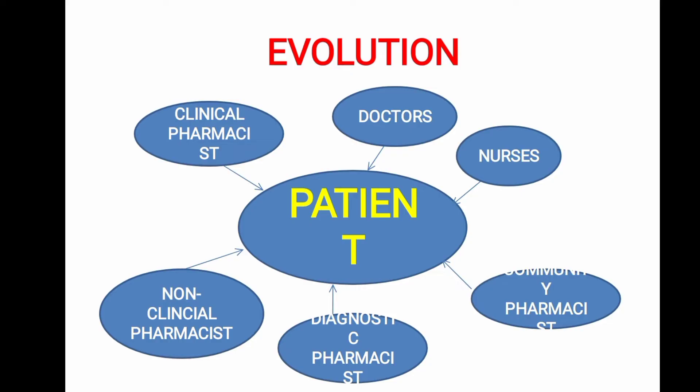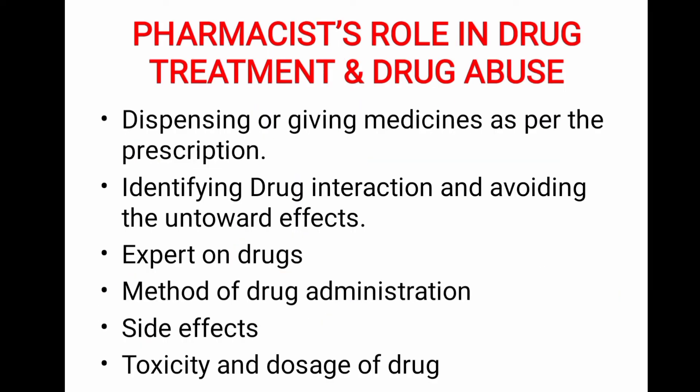The patient has an immediate connection with the doctor, nurse, community pharmacist, diagnostic pharmacist, non-clinical pharmacist, and clinical pharmacist. The doctor and pharmacist also have a very small initial role — first, they have dispensing and compounding. Looking at the pharmacist's role, it includes drug treatment and drug abuse, and the question is: which among the following are the roles of a pharmacist?